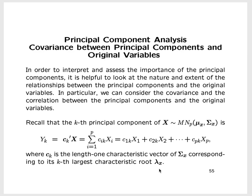So C_k is the length-one characteristic vector, and you want to note this — this should be λ_k, the kth largest characteristic root of Σ. The coefficients that define this linear combination of original variables giving the value of the kth principal component come from C_k, the length-one characteristic vector of Σ corresponding to the kth largest characteristic root λ_k.